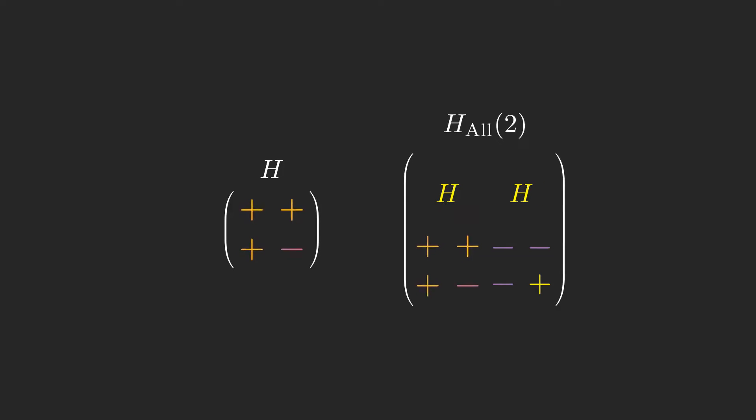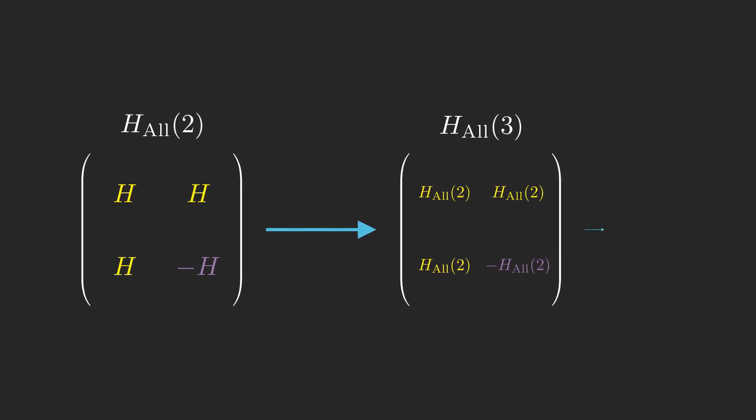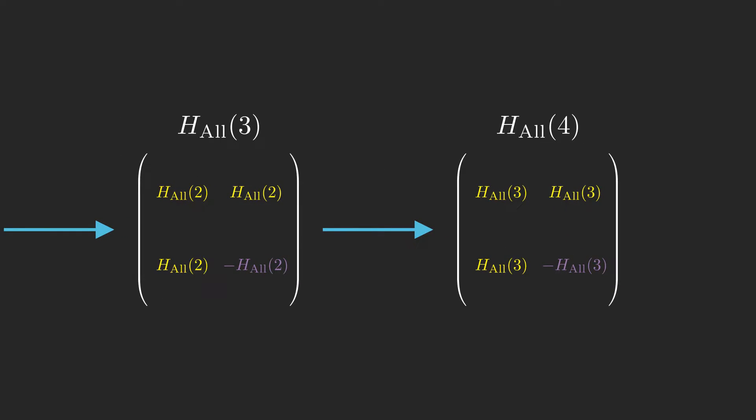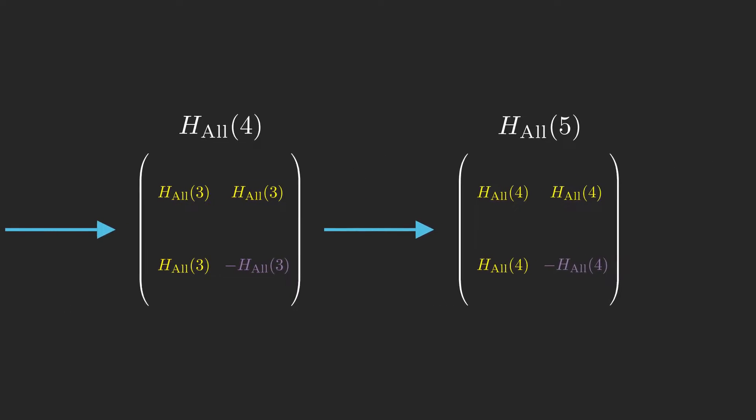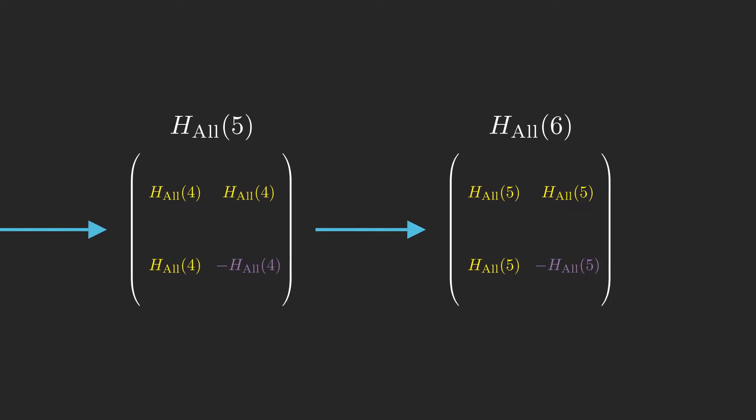This recursive pattern actually follows in general, meaning that the matrix representing Hadamard all on n qubits looks like 4 block matrices in terms of Hadamard all for n-1 qubits. We're going to skip the proof of that in this video, but you could do it by induction. If any of you are able to do it, I'd love to see what you come up with in the comments.